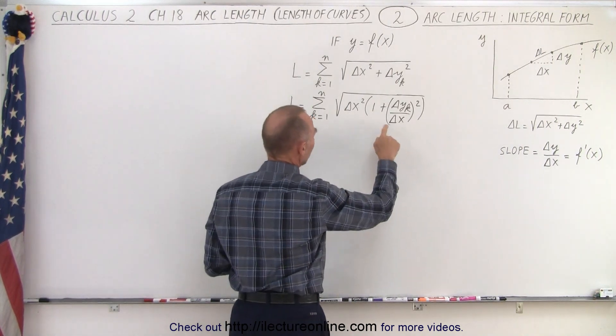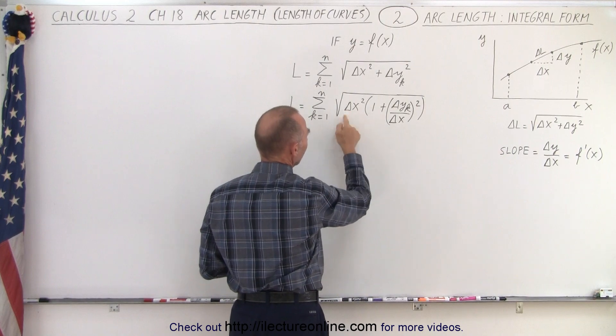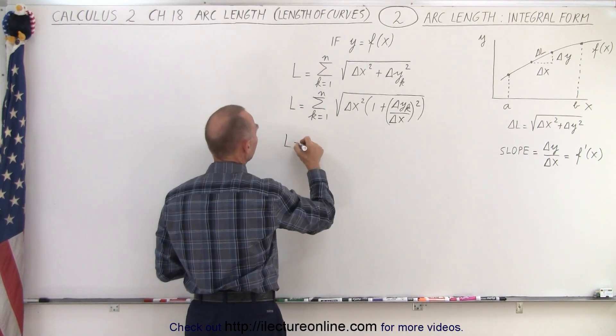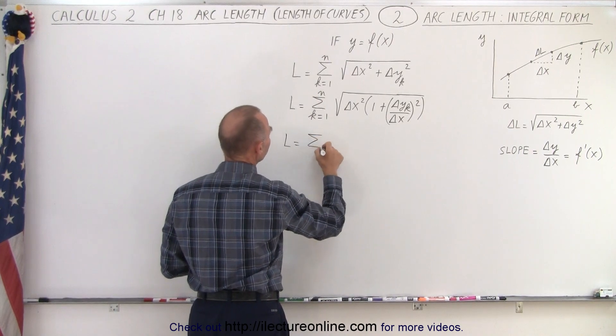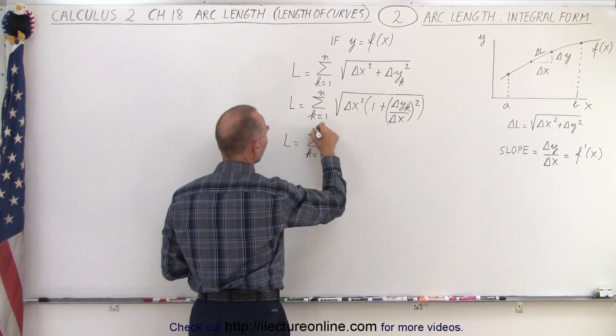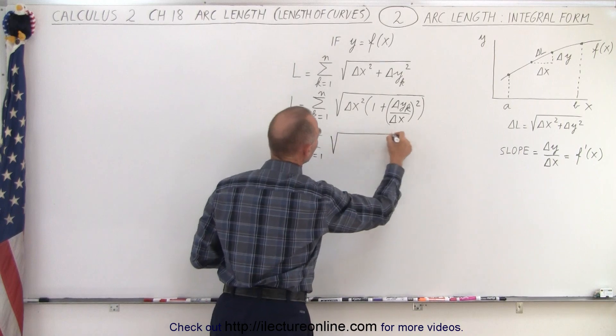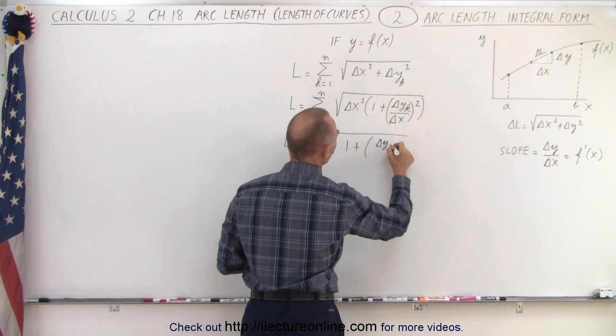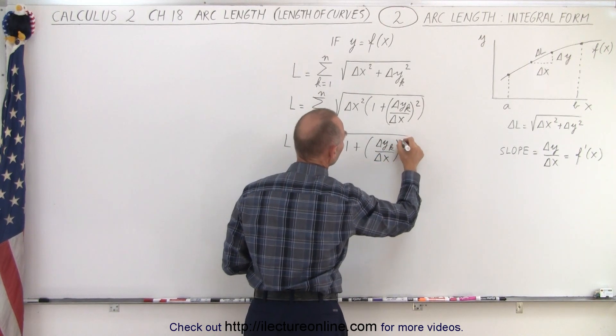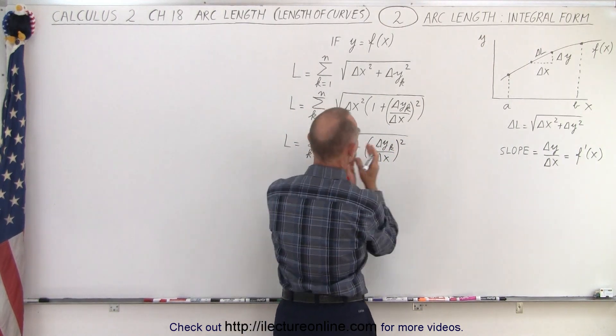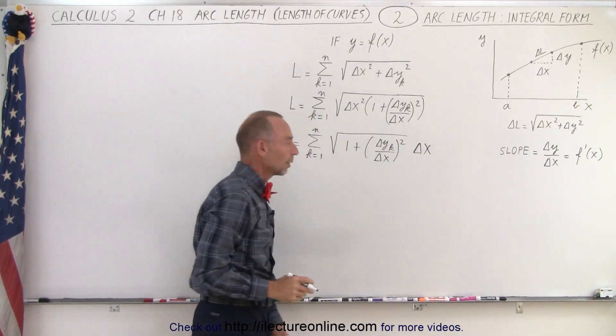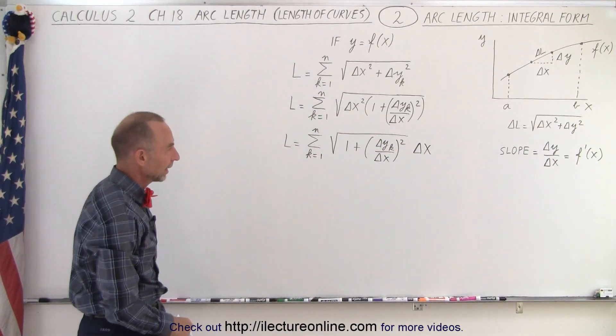So what we can do now next, we can say, well, first of all, the delta x can be factored out of the square root sign so now we can write that L is equal to the sum from k equals 1 to n of the square root of 1 plus the delta y sub-k over delta x quantity squared and then the delta x moved out, the delta x squared out of the square root sign simply becomes a delta x.